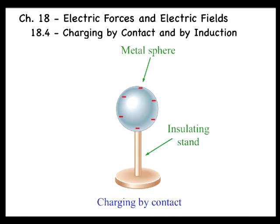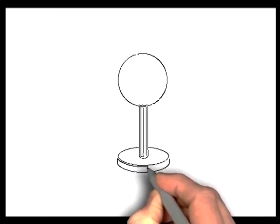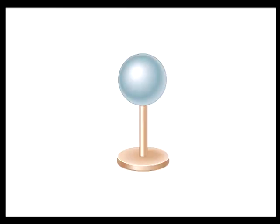It is also possible to charge a conductor in a way that does not involve contact. Suppose a negatively charged rod is brought close to, but does not touch, a metal sphere. In the sphere, the free electrons closest to the rod move to the other side.